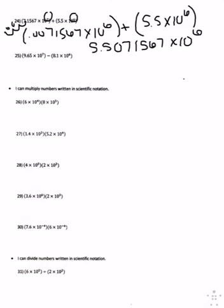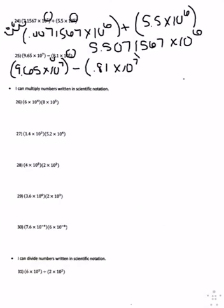Number twenty-five, you are going to make the exponents the same by moving the decimal up one place. The problem is 9.65 times 10 to the 7th minus 0.81 times 10 to the 7th. The exponents are the same, so you go ahead and subtract 9.65 minus 0.81, and you get 8.84 times 10 to the 7th.